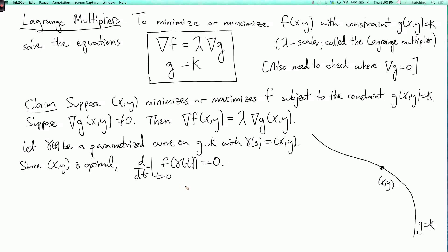Because if this derivative were not zero, then that would mean that we could either increase or decrease t a little bit and make f a little bigger or a little smaller, so it could not be a minimum or a maximum. This is assuming we're not on the boundary of the domain. So we must have this equation. Now the chain rule tells us that this expression is the gradient of f at the point x, y dotted with gamma prime of zero.